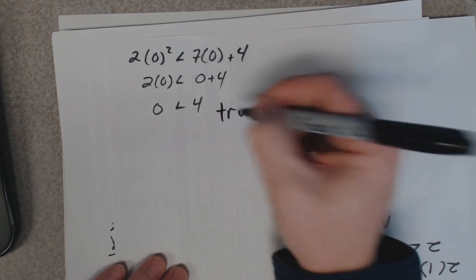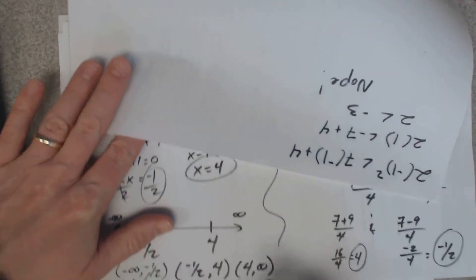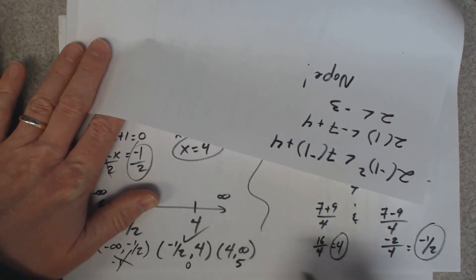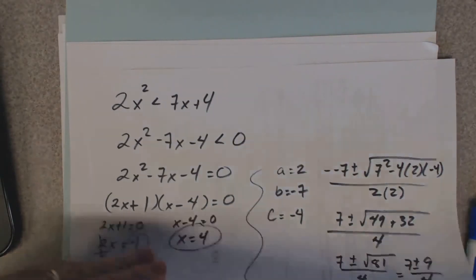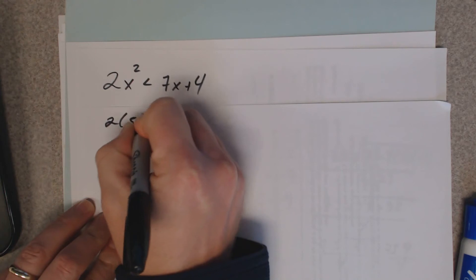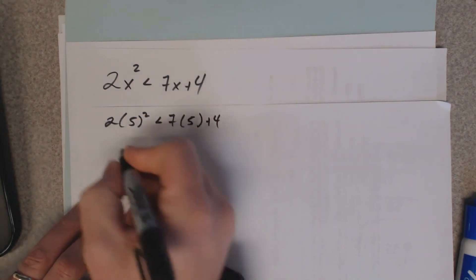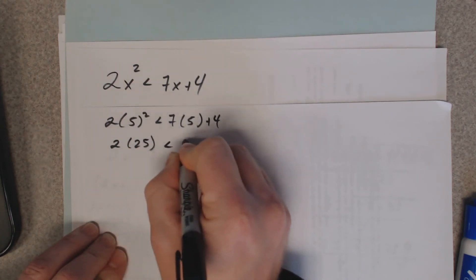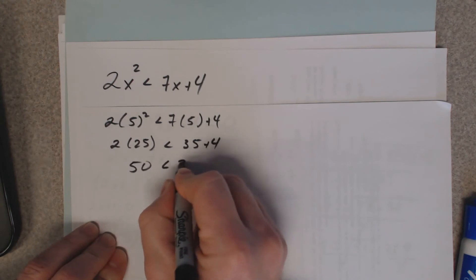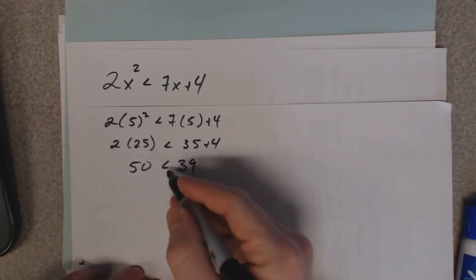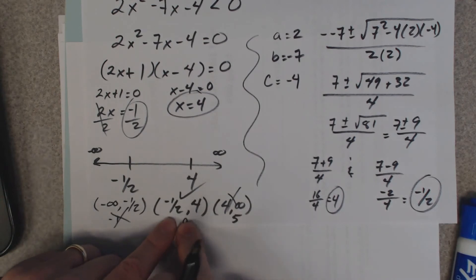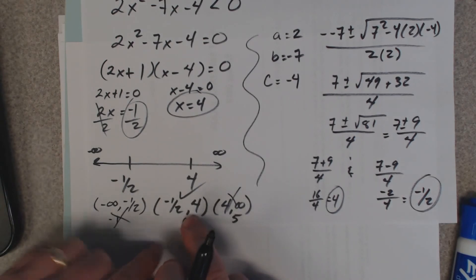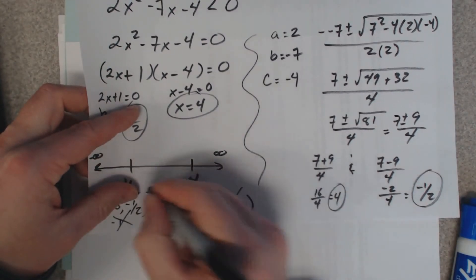Since x = 0 gives a true result, the interval (−1/2, 4) is part of our answer. Let's test x = 5 from the last interval: 2(5)² < 7(5) + 4 gives 50 < 39, which is not true. So that interval is not part of our answer. The only solution is the middle interval, giving a final answer of (−1/2, 4).